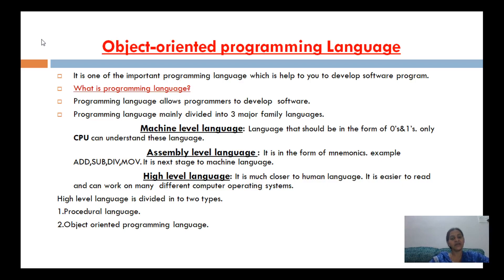High level language is much closer to human language like English. It is easier to read and can work on many different computer operating systems. High level language is divided into two types: one is procedural language, and the second is object-oriented programming language.